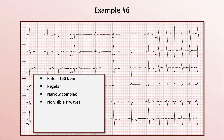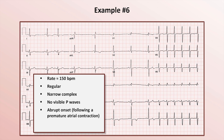Although it has not come up in the five prior examples, do you remember question number 6? Part of it asks whether the onset is abrupt or gradual. It looks like a very abrupt onset here, one which followed a premature atrial contraction.